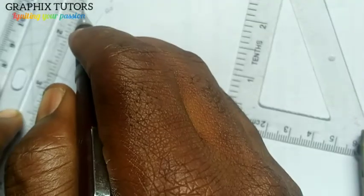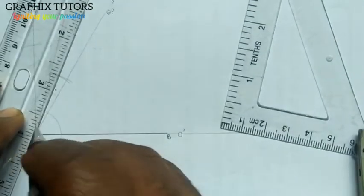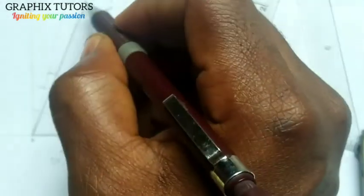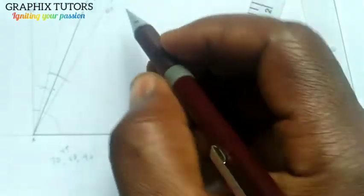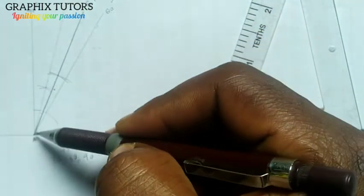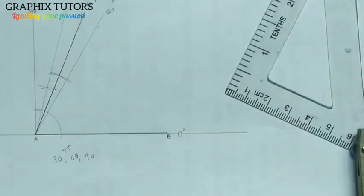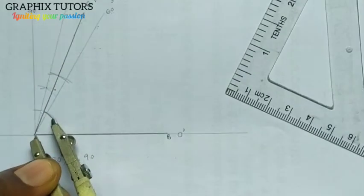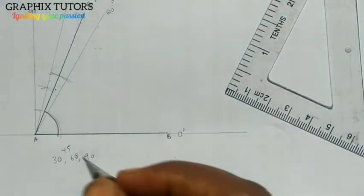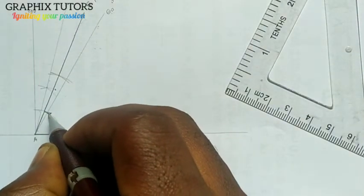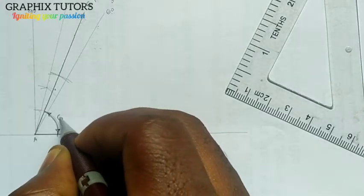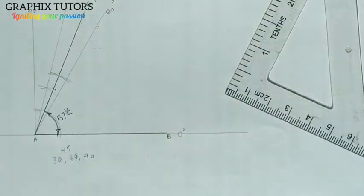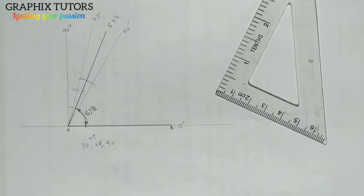When I take in this line, this will be 7 and a half. Bisecting 15 you have 7 and a half, and 7 and a half plus 60 will give you 67 and a half. So the reason I'm taking this line is because that is the actual angle I'm looking for. I will now place my compass at this point and draw my angle this way. This will be 67 and a half. So this is how you can construct your angle 67 and a half.